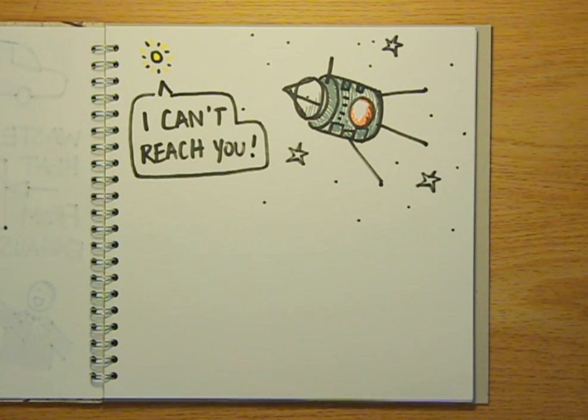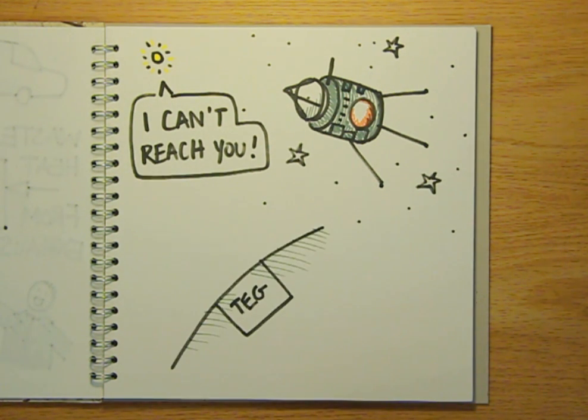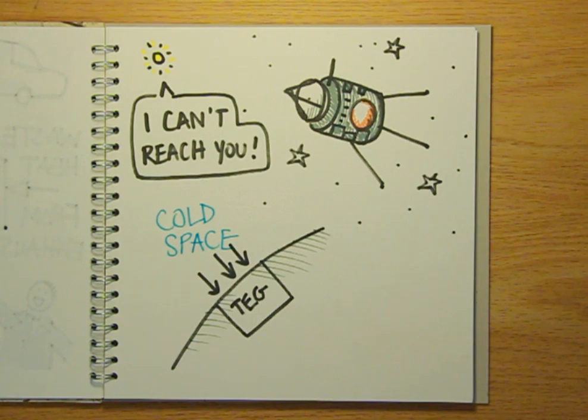Space provides an excellent working environment for TEGs because the average temperature in space is just 3 degrees above absolute zero, which takes care of the cold side of the generator very nicely.